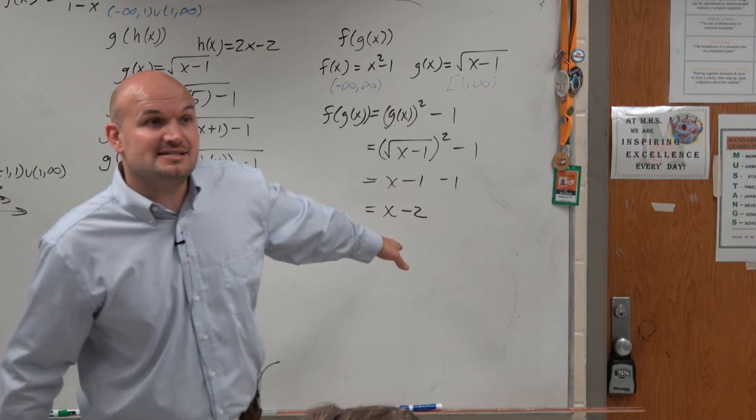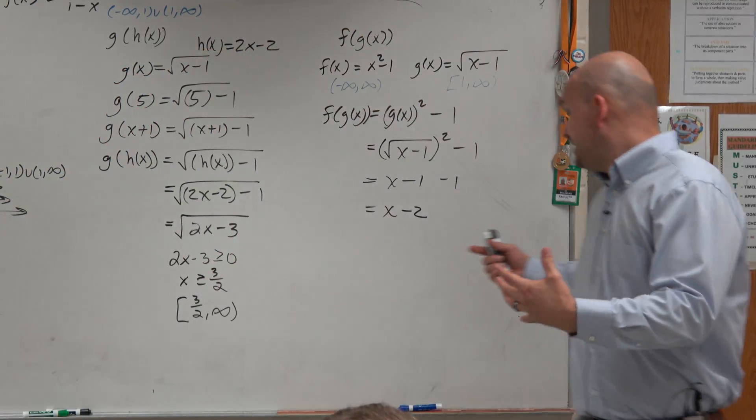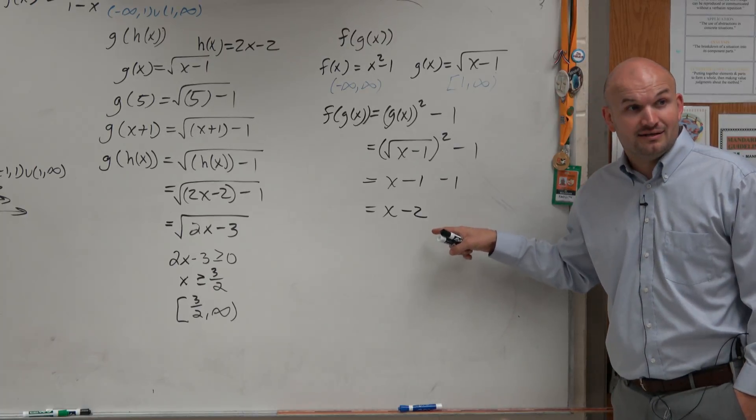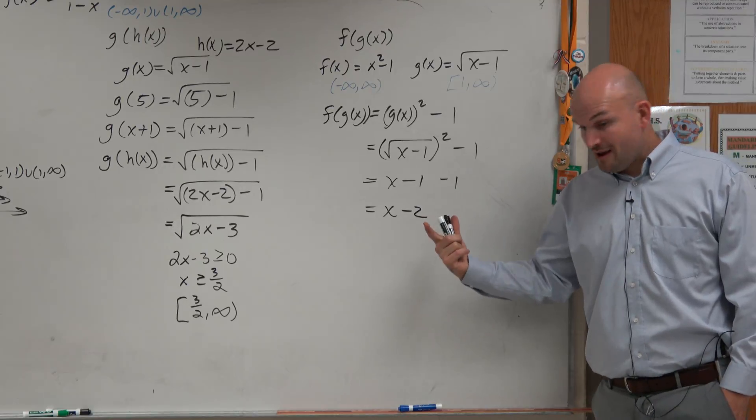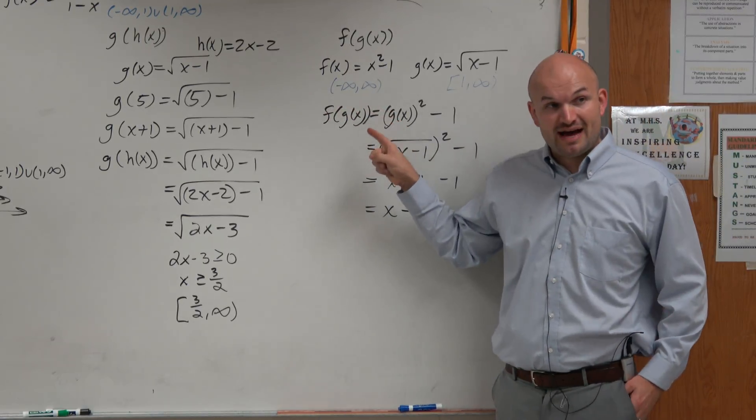But anyways, if you guys look at this, now the combination of them gives you another line, right? It gives you a line, correct? And the domain of a line is going to be all real numbers. However, that is not the domain of f of g of x.